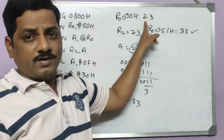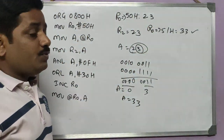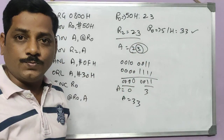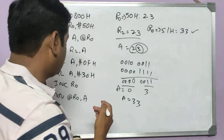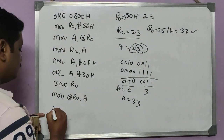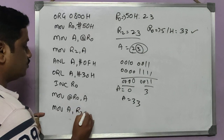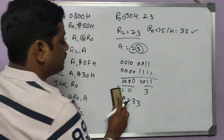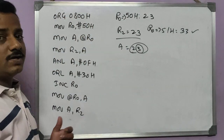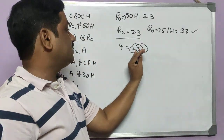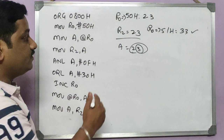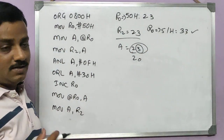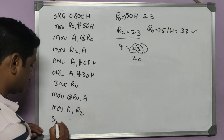Now I need to process the upper nibble, digit 2. The original input was temporarily stored in R2, so I recall it into the accumulator: MOV A, R2 — the accumulator again holds 23H. To isolate the upper nibble, I first perform SWAP A, which swaps the upper and lower nibbles, giving 32H in the accumulator.